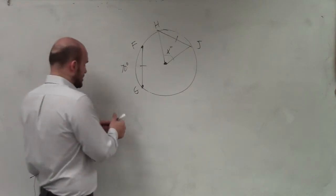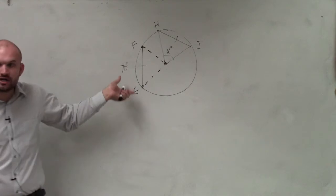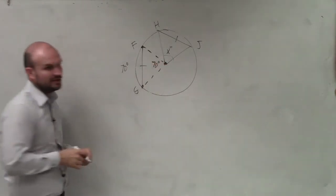So this arc is represented by 70 degrees. Now remember, when the arc is represented by 70 degrees, that means the central angle is 70 degrees as well.